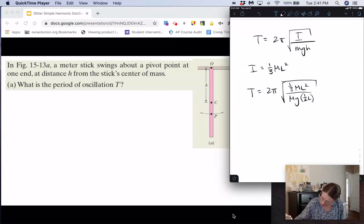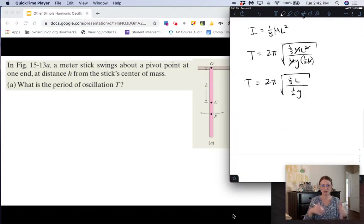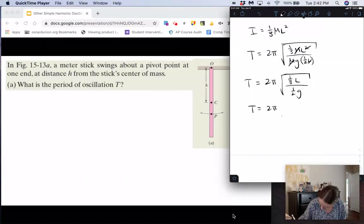So here mass cancels out, one of the L's cancel out, and so we end up getting period is equal to 2π times the square root of one-third L over one-half g. And then since we have those two fractions, we can flip them and multiply. Then we get period is equal to 2π times the square root of 2L over 3g.